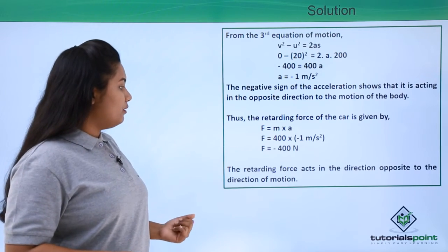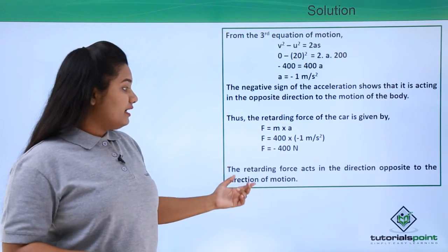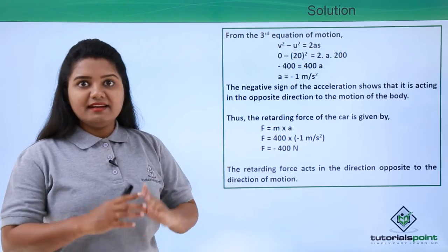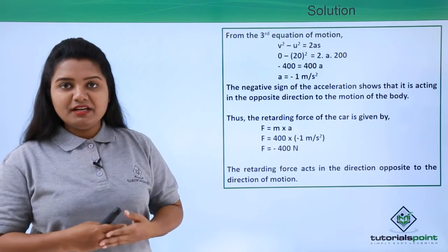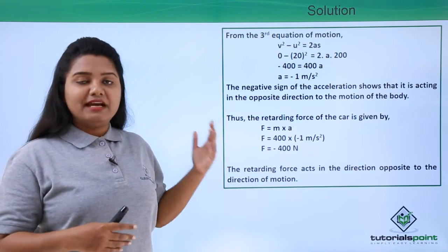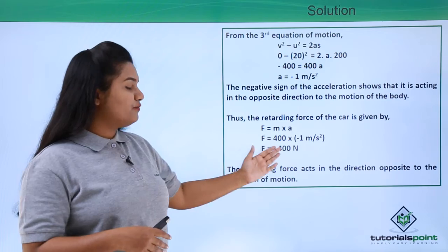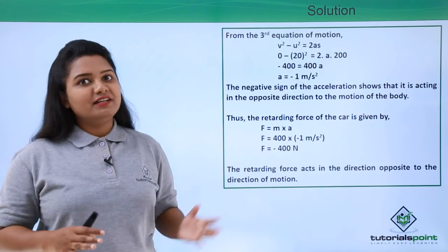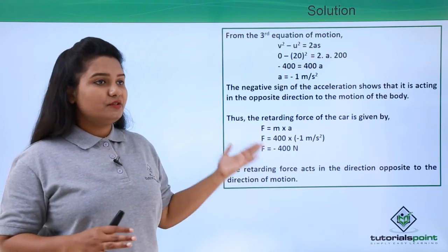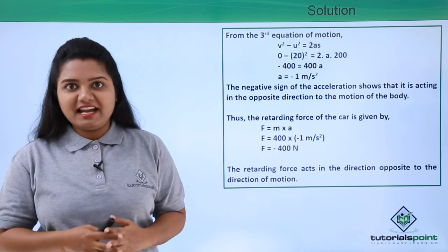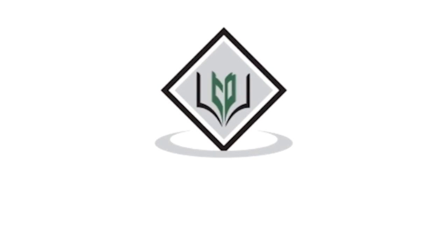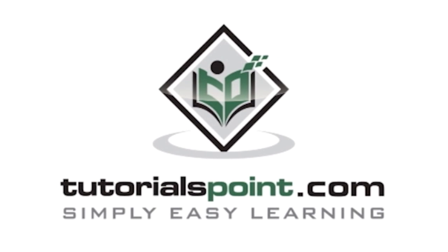So this is what we have found: the retarding force acting on the car that brought it to a stop is −400 Newtons. I hope the solution of this problem was fully understandable to you. Thanks for watching TutorialsPoint.com — Simply Easy Learning.